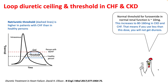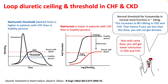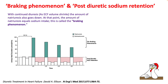In a normal person, the threshold for Lasix is around 10 mg, and this increases to 80 to 160 mg in CKD and heart failure, meaning you will get an inadequate diuretic response at lower doses. Natriuresis is also lower in patients with heart failure and CKD compared to healthy persons — with the same dose of Lasix, you will get lower natriuresis in these two groups.